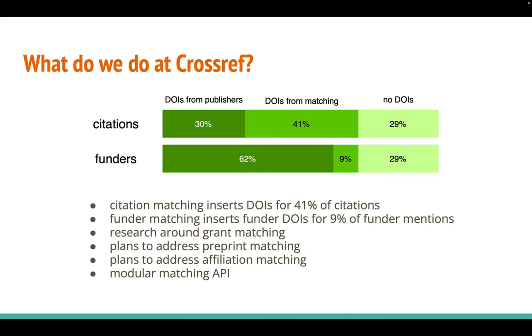We also plan to address preprint matching and affiliation matching. And finally, we are thinking of building a matching API which will allow users to run different matching approaches on different kinds of inputs, and evaluate and compare them.